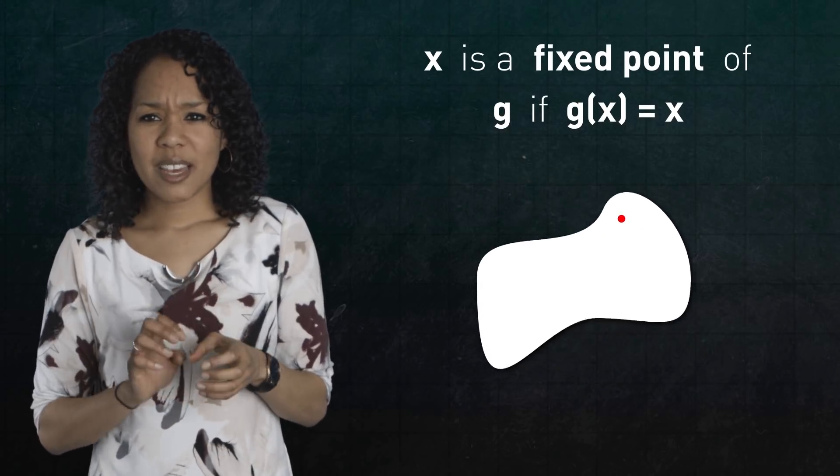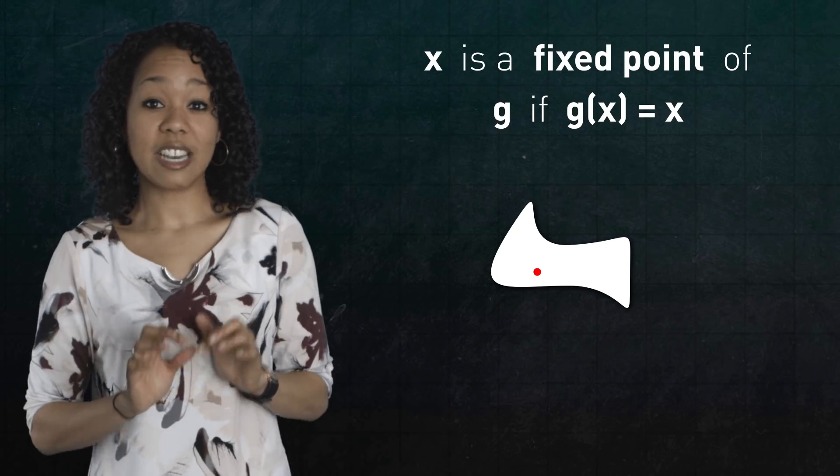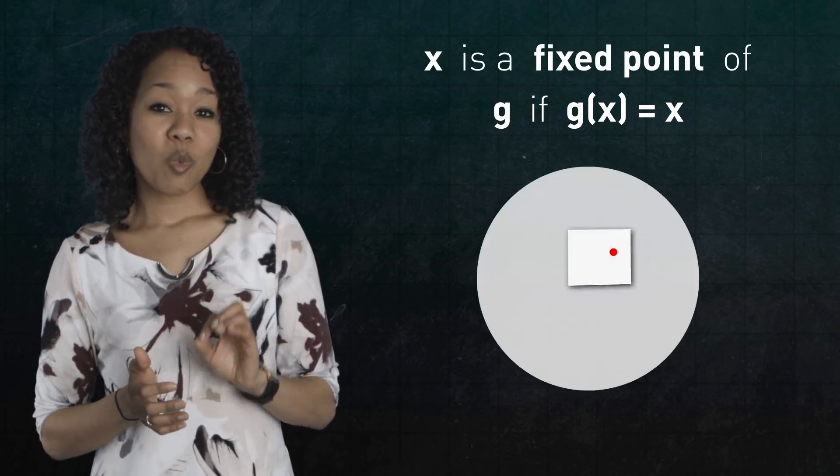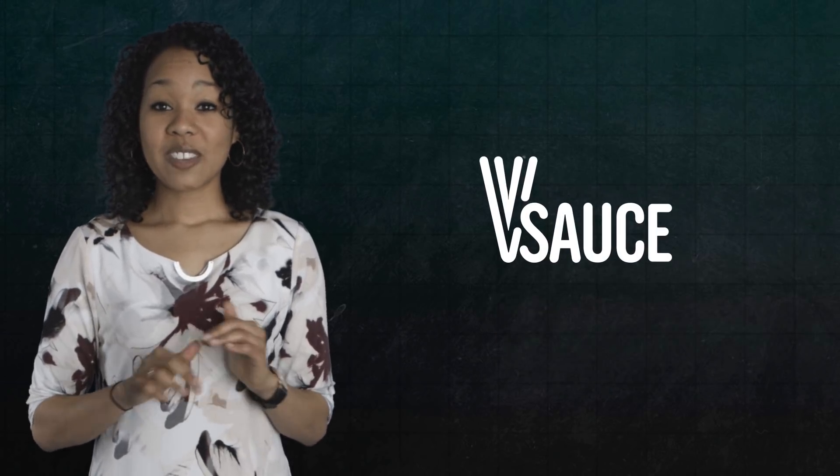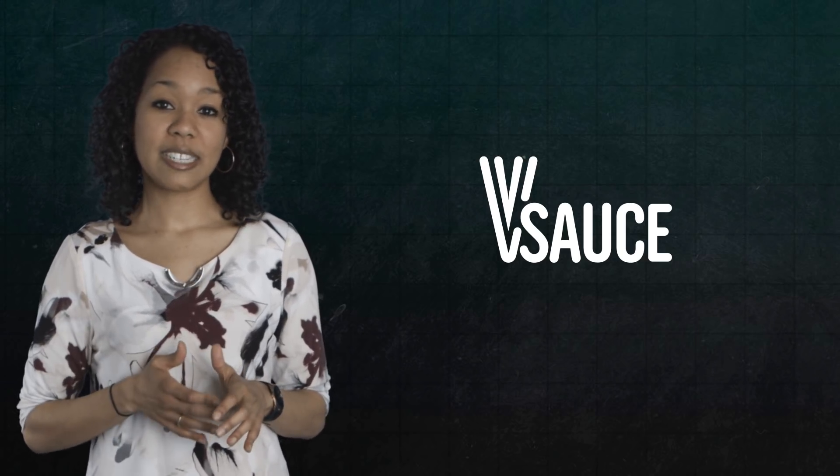So no matter how you rotate, bend, twist, stretch, or deform a disk, or any shape that's topologically equivalent to a disk, like a rectangular map, there's always at least one point that ends up in its original location. Michael from Vsauce has a great video about fixed points where he explains Brouwer's fixed-point theorem in more detail.